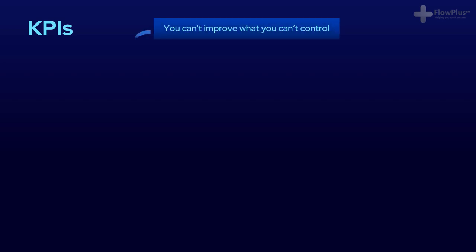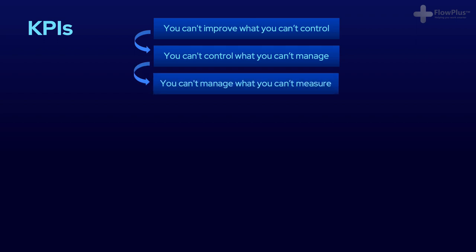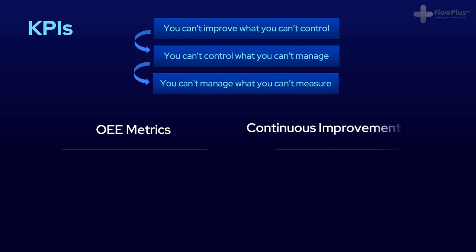And lastly, to promote continuous improvement, problems and successes need to become visible. To do this, metrics need to be measured. Remember, you can't manage what you can't control, and you can't control what you can't measure. In terms of what metrics to measure, OEE or continuous improvement metrics like number of machine enhancements or improvements is a good place to start.